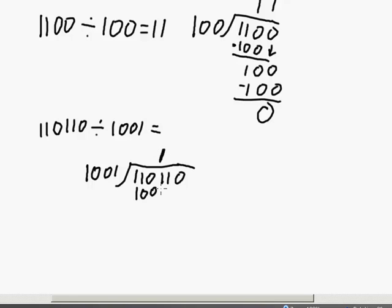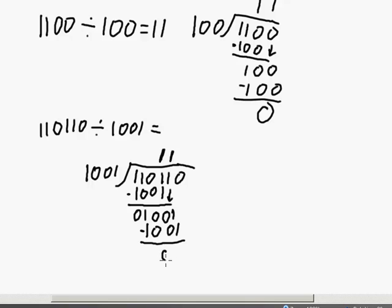One times 1001 is 1001. We do the subtraction: 1 minus 1 is 0, 0 minus 0 is 0, 1 minus 0 is 1, 1 minus 1 is 0. So we have 100, and we bring down the next bit: 1, giving us 1001. 1001 into 1001 goes one time. One times 1001 is 1001. Do the subtraction — all zeros — and bring down the last zero. 1001 goes into 0 zero times, and we get a remainder of zero.